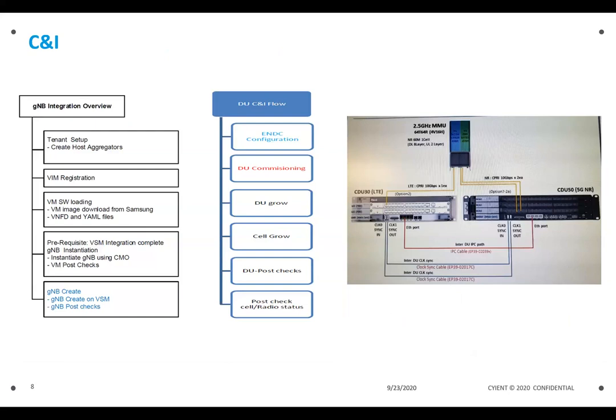Functional decomposition with well-defined interfaces and splits allows even more flexibility beyond hardware and software disaggregation. We are going to disaggregate the control plane component and the user plane component — a horizontal decomposition and a vertical separation between control plane and user plane. This is a typical commissioning and integration process of a gNodeB: tenant setup, room registration, software loading as prerequisites, then DU commissioning, DU grow, cell grow, and post checks. For major carrier deployments today, most of this work is automated — the commissioning and integration process is automated. You see a 4G card on the left and a 5G CD50 on the right — these kinds of deployments are happening these days.